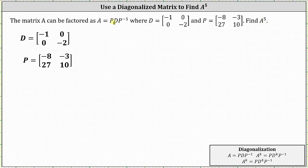Once we determine the diagonalization of matrix A, we can determine the fifth power of matrix A by determining P times D to the fifth times P inverse.